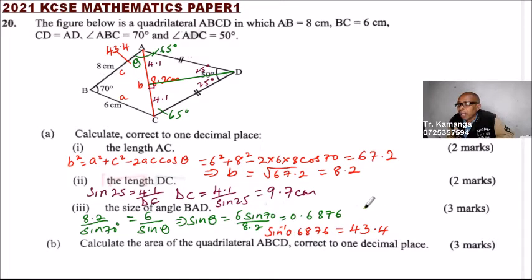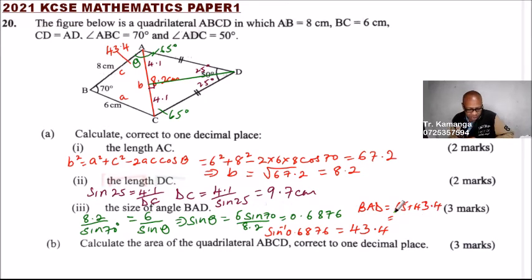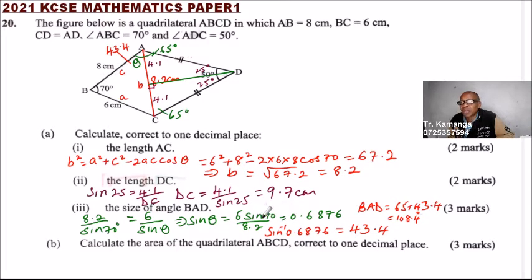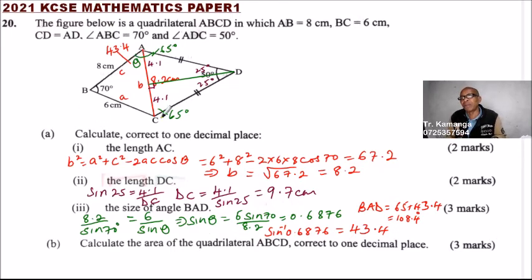Now angle BAD equals 65 plus 43.4, which gives us 108.4 degrees. So the size of angle BAD is 108.4 degrees. We needed to find angle theta, add it to 65, and that gives us the full angle.